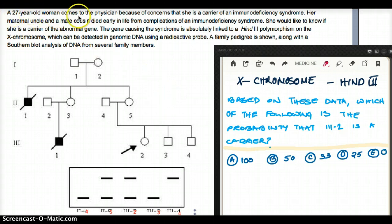a 27-year-old woman comes to the physician because of concerns that she is a carrier of an immunodeficiency syndrome. Her maternal uncle and a male cousin died early in life from complications of an immunodeficiency syndrome. They're not saying the immunodeficiency syndrome, of an immunodeficiency syndrome. So let's not jump to the conclusion that it's the same disease.